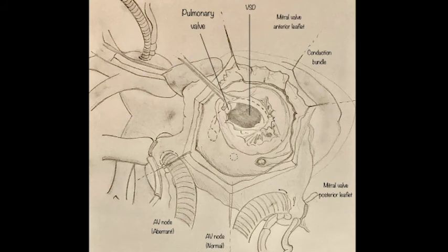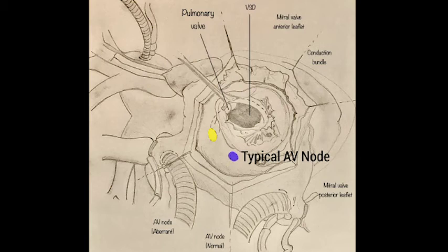With respect to the location of the conduction system, in CCTGA with usual atrial arrangement, the atrioventricular conduction axis arises from an anteriorly located atrioventricular node rather than from the typical AV node located at the apex of the triangle of Cook. This is important when closing a VSD associated with CCTGA to avoid any damage to the conduction system itself.